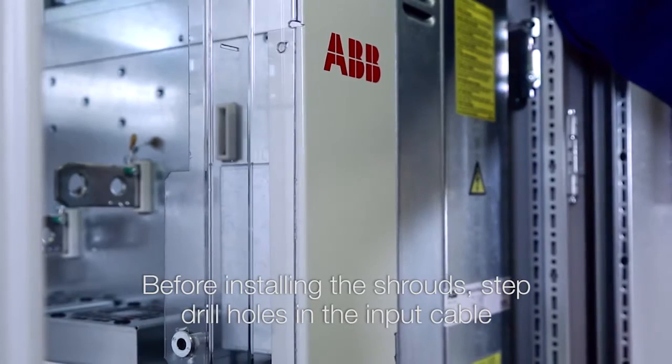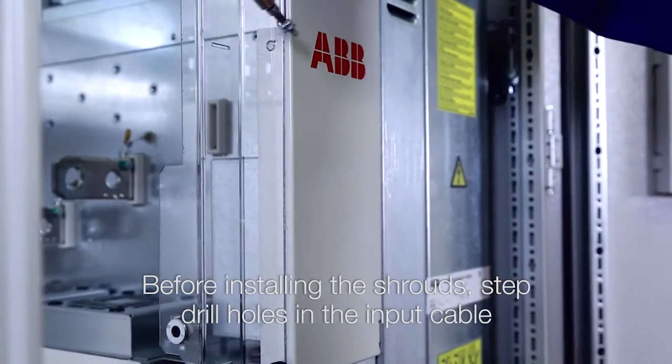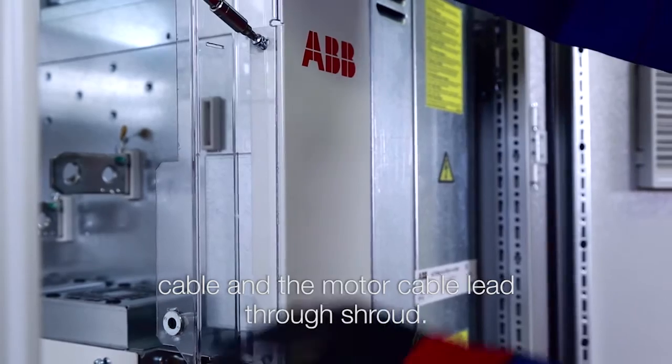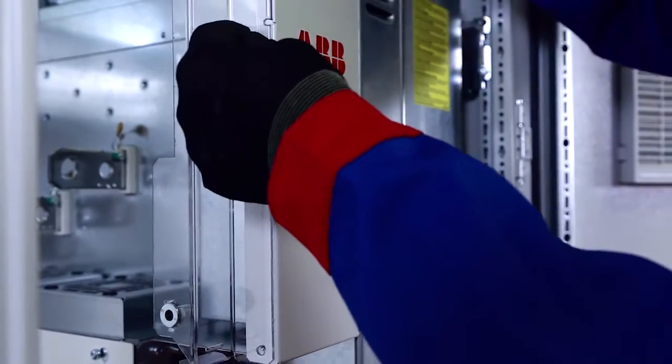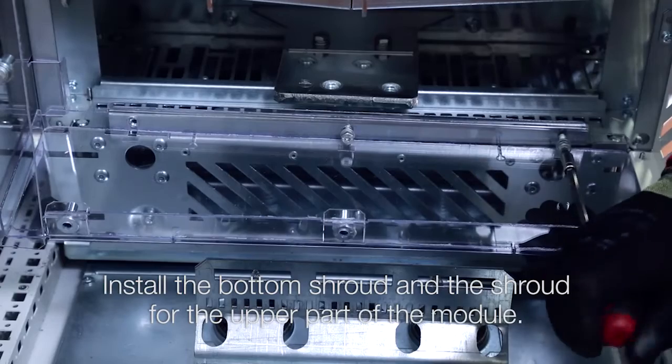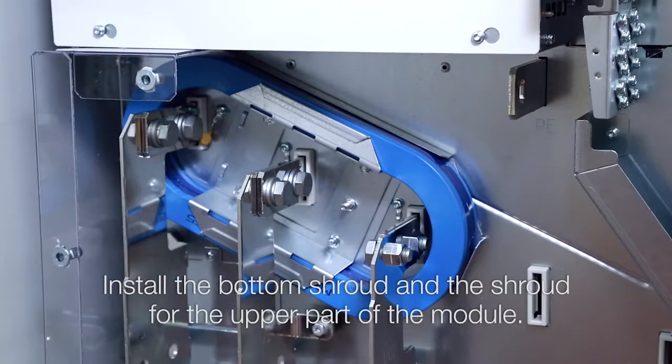Before installing the shrouds, step drill holes in the input cable and the motor cable lead through shroud. Install the bottom shroud and the shroud for the upper part of the module.